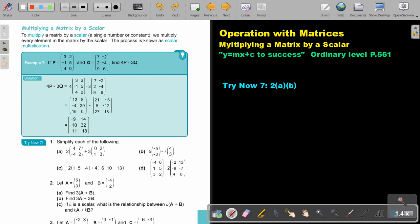Let's start. Number 2A. It's 3 times (A plus B). Let's do substitution. In the place of A, I put 5 and 3. In the place of B, I put negative 4 and 2. I can first add this and then multiply by 3. So 5 plus negative 4 is 1, and 3 plus 2 is 5.